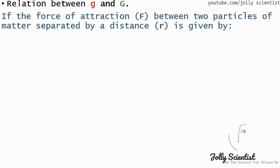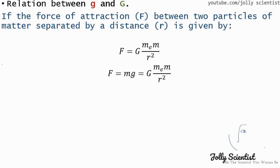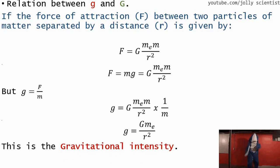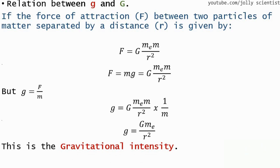The relationship between small g and big G: if the force of attraction F between two particles of matter separated by distance R is given by F equals G times M1 times M2 divided by R squared, and we substitute F with Mg, then since g equals F divided by M, on canceling out M, we have g equals big G times M1 divided by R squared, where M1 is the larger mass. This is the gravitational field intensity.